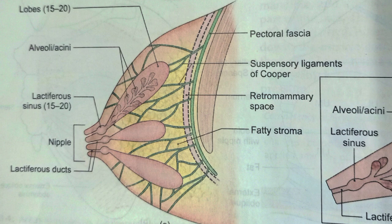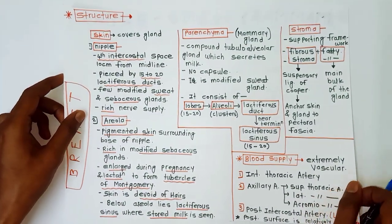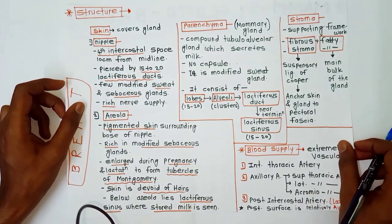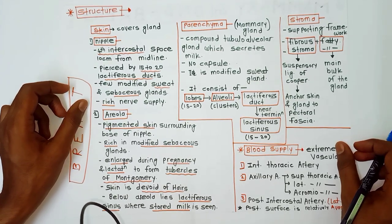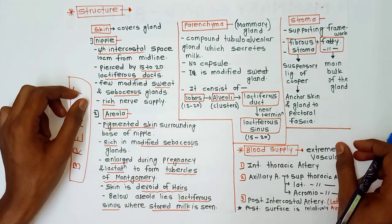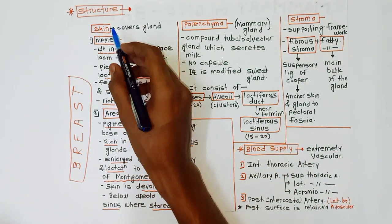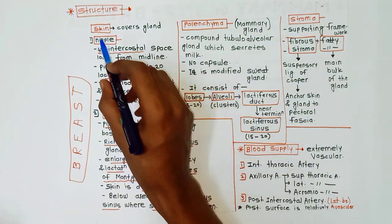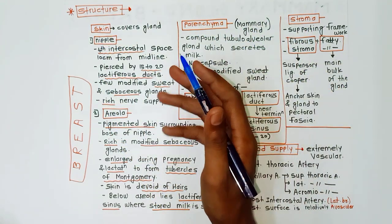After that we have the structure of the breast, which is also an important topic. Structure consists of basically three parts: skin, parenchyma, and stroma. The breast is also called the mammary gland.